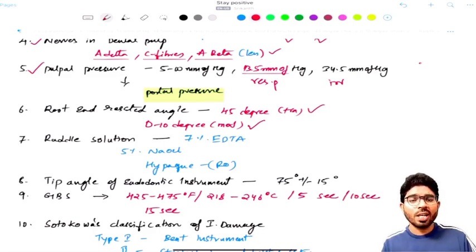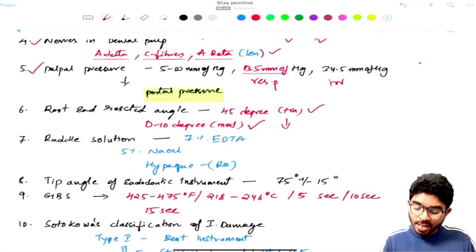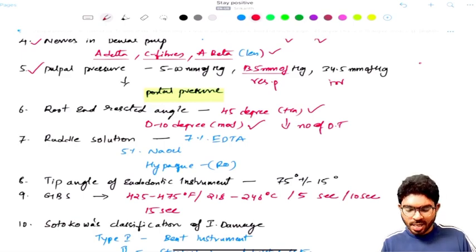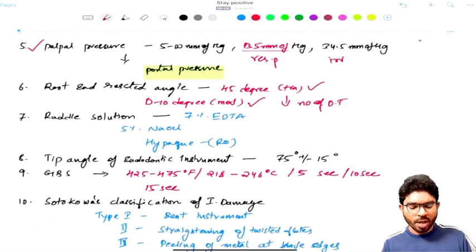The basic reason for modifying 45 degrees to 10 degrees is lesser exposure, lesser exposure of the dentinal tubules. In 45 degrees angle, you will have more exposure of dentinal tubules, more chances of reinfection. Whereas in 0 to 10 degrees, lesser exposure of the dentinal tubules, number of dentinal tubules exposed is less. So that is going to be an advantage. That is the reason why it was down to 0 to 10 degrees in modern endodontics when compared with the traditional endodontics.